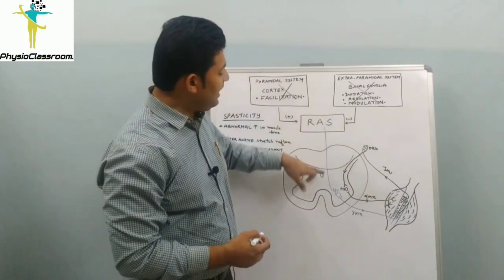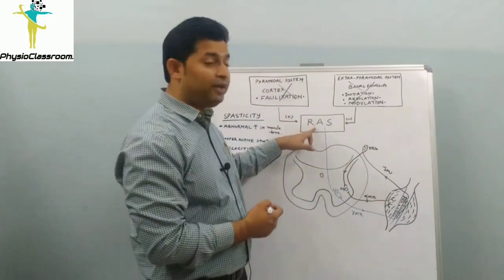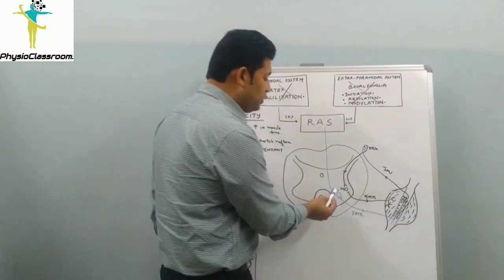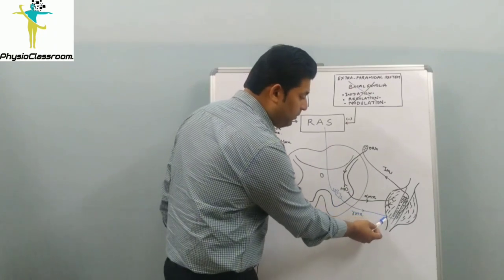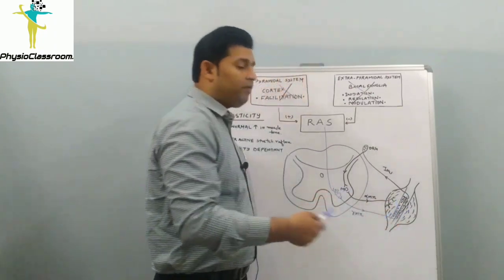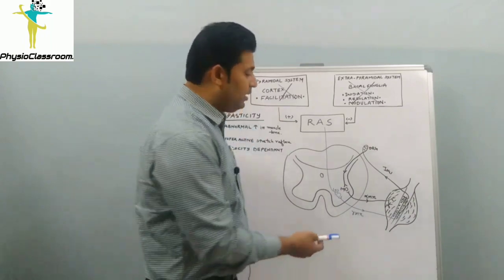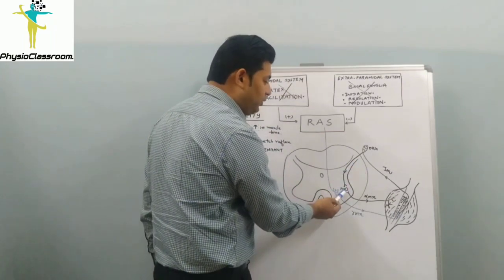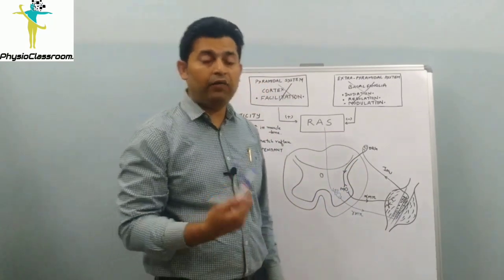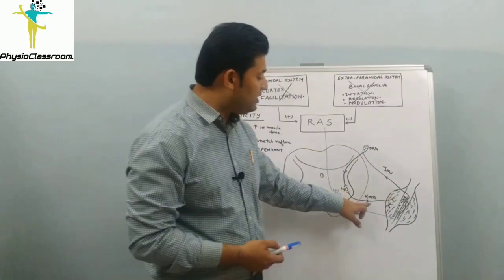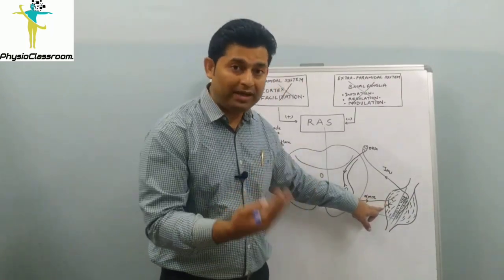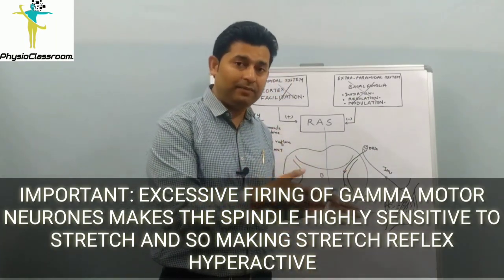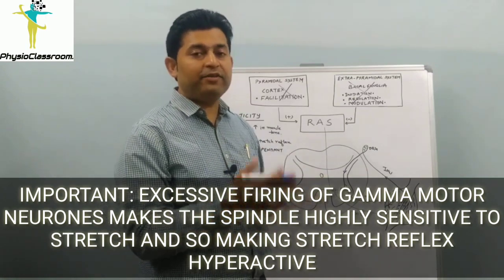If the descending excitatory discharges from the reticular activating system to the gamma motor neurons are uncontrolled, there will be excessive firing of the gamma motor neuron. As a result, intrafusal fiber tension increases, which is perceived by the 1a fiber. The 1a fibers in turn stimulate the alpha motor neuron, increasing alpha motor neuron discharges to the extrafusal fiber, resulting in more tone in the muscle.